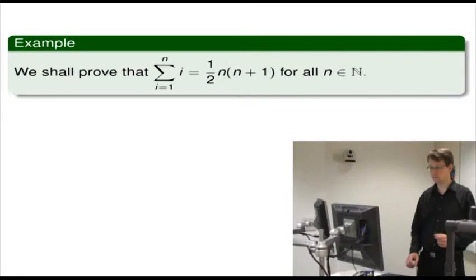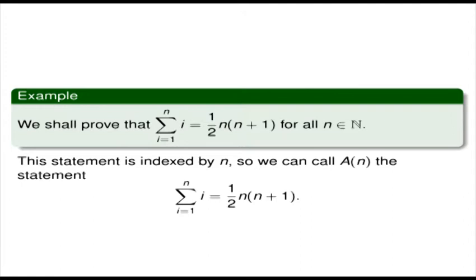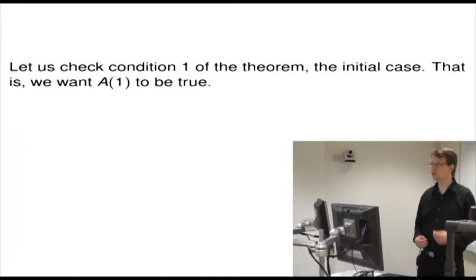We shall prove the statement that the sum of the first n numbers is equal to one half n times n plus 1, for all n in the natural numbers. The statement is indexed by n, so we'll call A(n) the statement: the sum from i equals 1 up to n of i equals one half of n times n plus 1. We want to show that this is true for each n. Let's check the first condition of the theorem — the initial case — that is, we want to show that A1 is true.